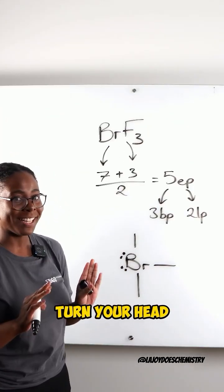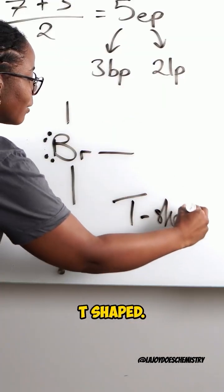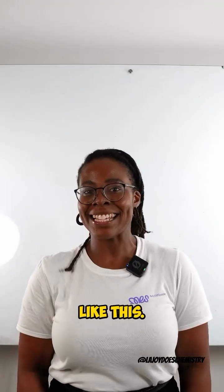So, now the shape, if you turn your head to the side, you might be able to name it with me, is called T-shaped. How did you do? Follow me for more chemistry content like this.